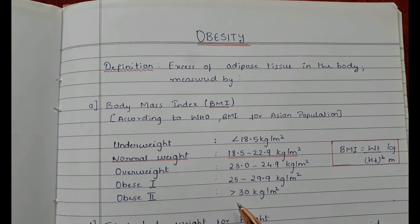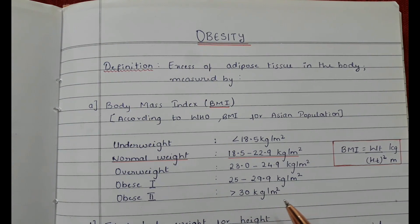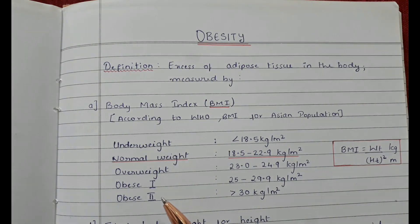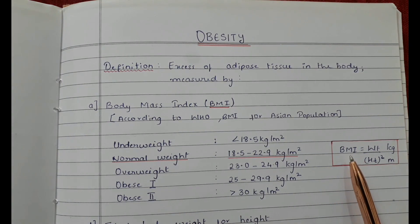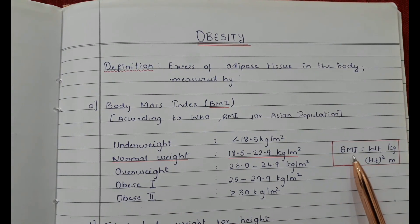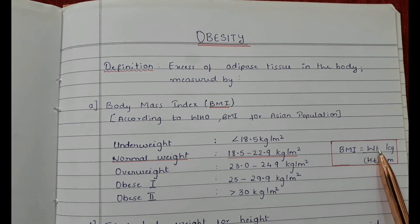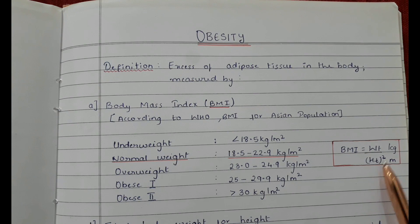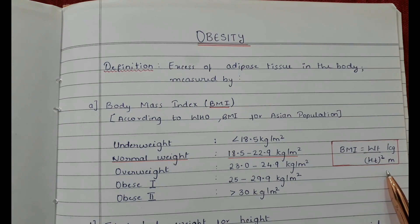Greater than 30 kg per meter square is considered as obesity. BMI is calculated by weight in kilograms divided by height squared in meters.